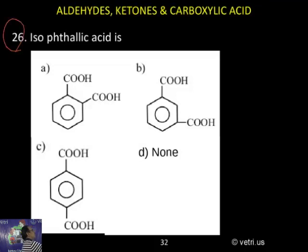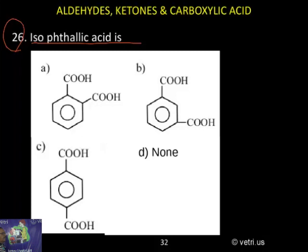Question 26: Isophthalic acid. There are four structures given — A, B, C, and D. Which one is called isophthalic acid?